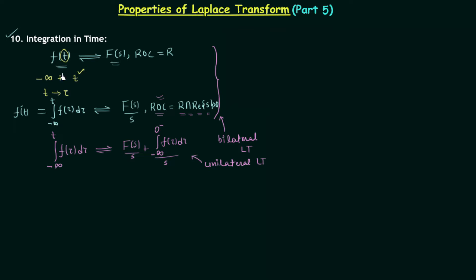We will now prove the result for the bilateral Laplace transform. The process is the same as in the Fourier transform chapter. We take our time domain signal f(t) and convolve it with the unit step signal u(t), which can be written as the integral from minus infinity to infinity of f(tau) multiplied by u(t minus tau) d(tau).